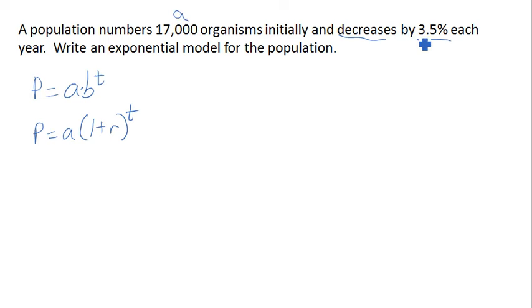So once again, 17,000 is our A. It's our initial amount. Here, this is telling us something about our growth rate, but we're not growing by 3.5% each year. We're decreasing by 3.5% each year. So our growth rate here is going to be negative, negative 0.035. Again, it's the percent written as a decimal, but in this case, a negative growth rate.